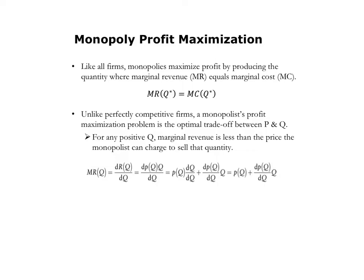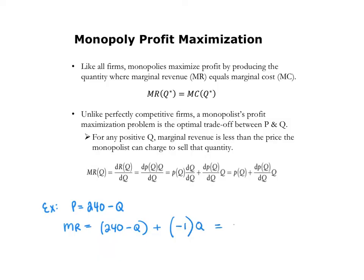I'm going to show you an example. In this equation, price as a function of quantity is the monopolist's demand curve. For example, suppose the monopolist faces a demand of P equals 240 minus Q. For this demand curve, let's derive the marginal revenue function. Marginal revenue equals price — here 240 minus Q — plus the derivative of P with respect to Q, here dP/dQ is minus 1, times Q. So marginal revenue in this example is 240 minus Q minus Q, or 240 minus 2Q.